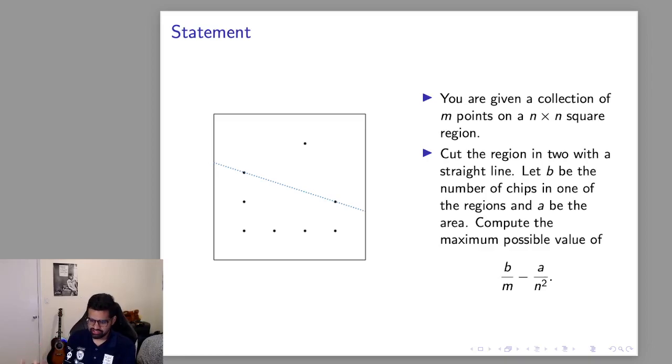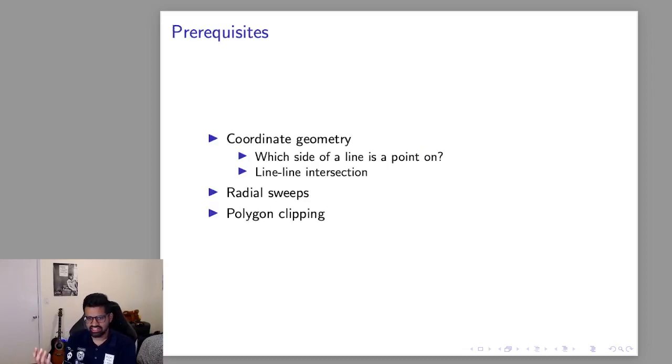How would you go about solving this? Well unsurprising to anybody this is a geometry problem and because this is an outline and not a detailed solution video I'm going to assume some familiarity with coordinate geometry. In particular you should be comfortable finding which side of a line a point is on, finding line-line intersections